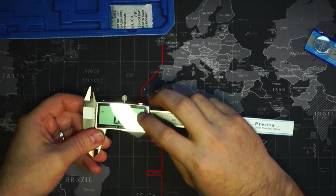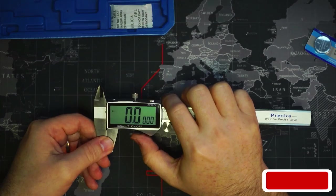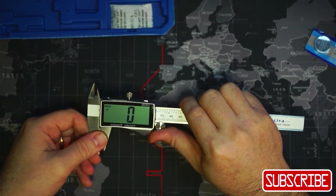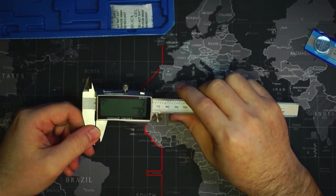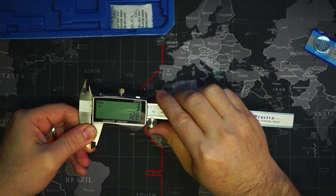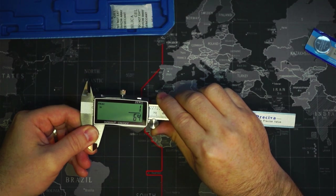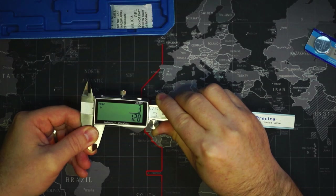So tens, hundreds, thousands, ten thousandths. And then we have another measurement here. This is fractions. This is actually a great feature that not a lot of calipers will come with.